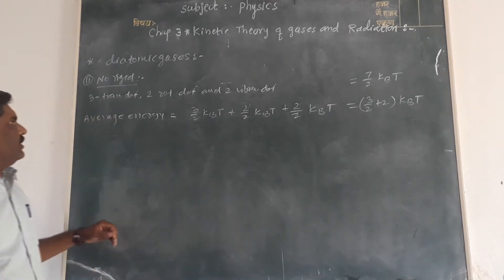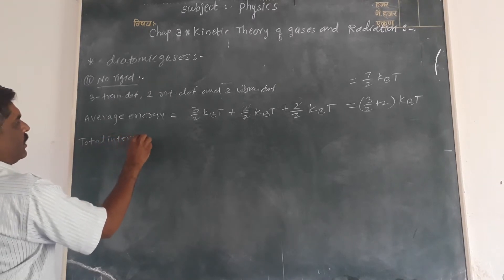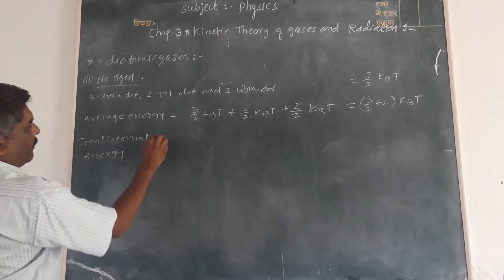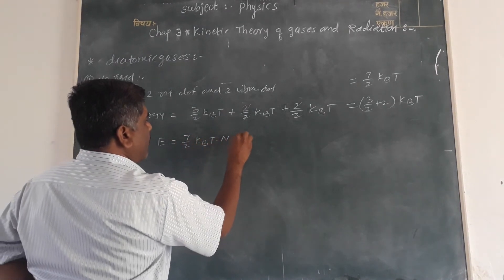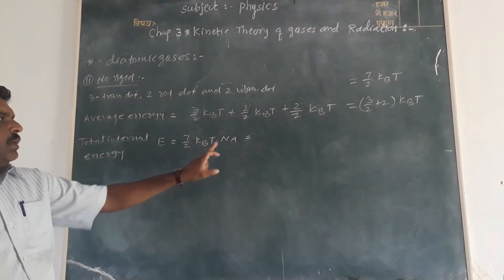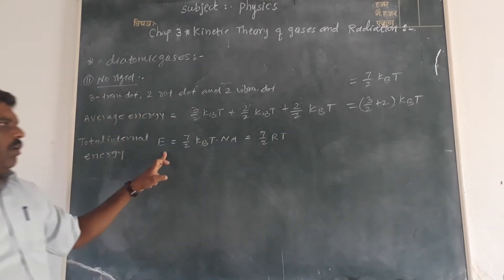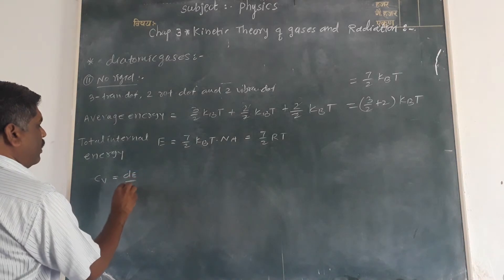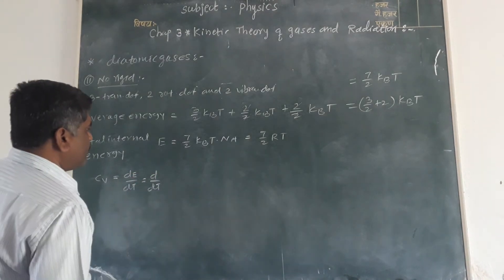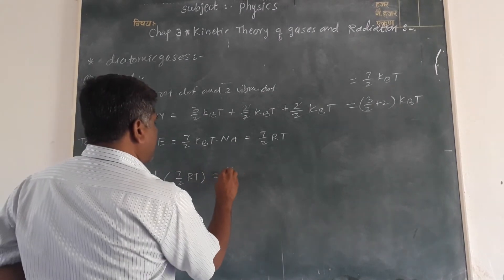The total internal energy is equal to 7/2 K_B T multiplied by N. Since N_A times K_B T equals R, the total internal energy is 7/2 R T. Therefore, C_V is equal to dE/dT, which gives C_V equal to 7/2 R.